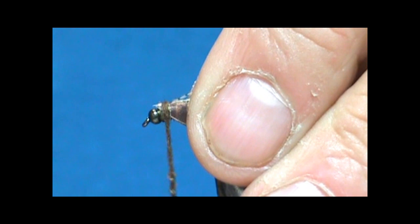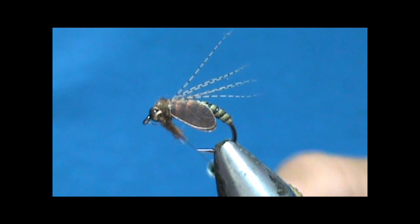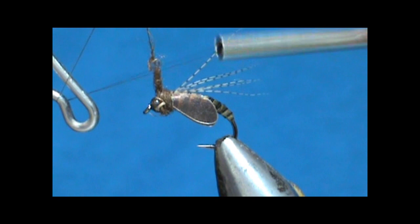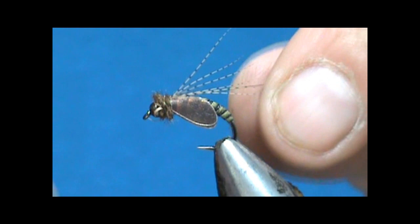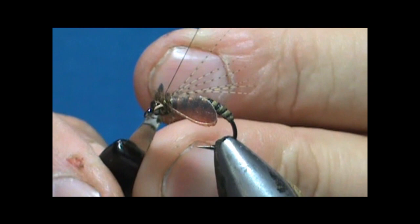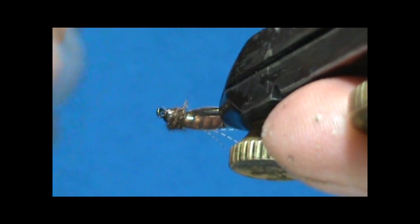I'm going to go ahead and wrap this. Now before I finish that wrap I'm going to get the whip finish. Hit that with the whip finish, tighten it up. Take that thread off.